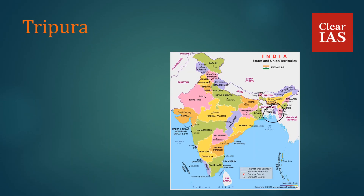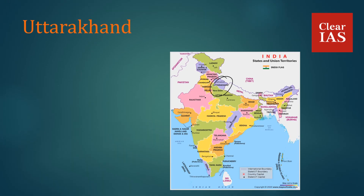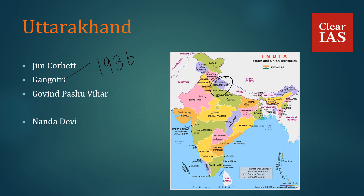In Tripura, we have Clouded Leopard National Park and Bison National Park. In Uttar Pradesh, we have Dudhwa National Park. In Uttarakhand, we have Jim Corbett National Park — the oldest National Park in India, established in 1936 — Gangotri National Park, Govind Pashu Vihar, Nanda Devi, Rajaji National Park, and Valley of Flowers. Nanda Devi and Valley of Flowers are also UNESCO World Heritage Sites.